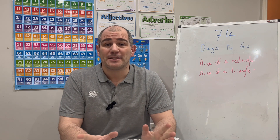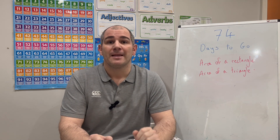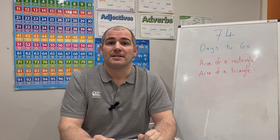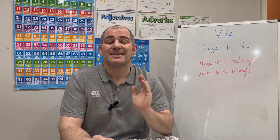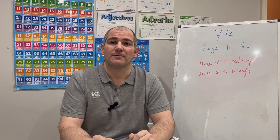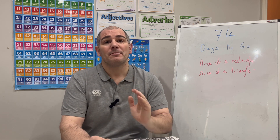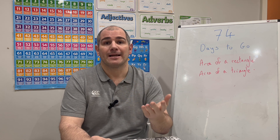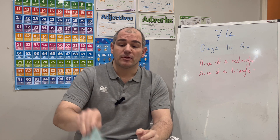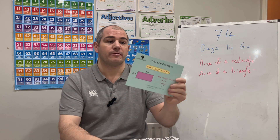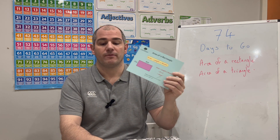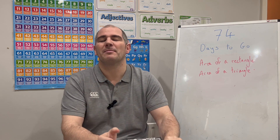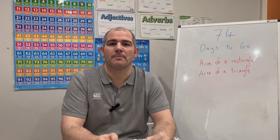Hi everyone, welcome to this GCSE Foundation revision video. We're doing the 100 days countdown until the GCSE Maths exam and there's 74 days to go. Today we're going to focus on two topics: the area of a rectangle and the area of a triangle. If you've got the revision cards, the area of a rectangle is card 13 and the area of a triangle is card 14.